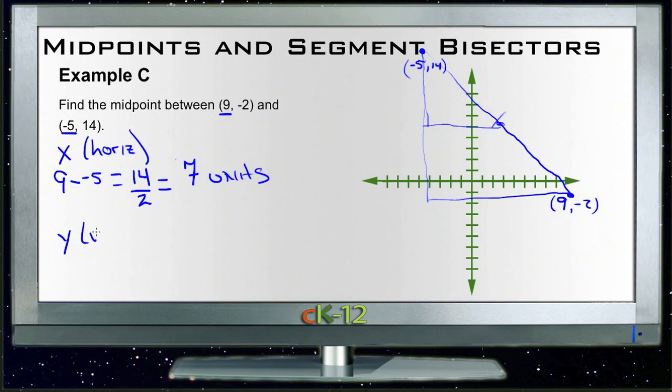Then we do the same thing for the y or the vertical difference. And it's going to go from 14 to -2, so we want the difference between 14 and -2. That would be 16 units. Divide that by 2 gives us 8 units.